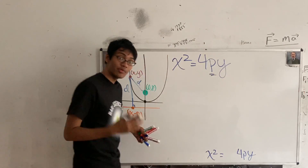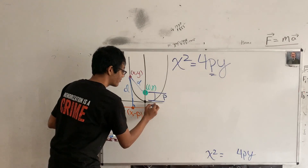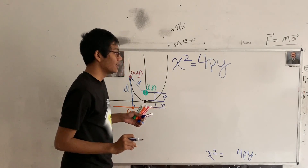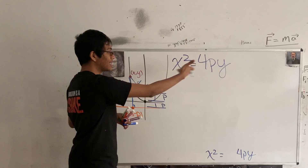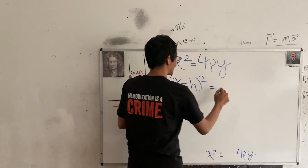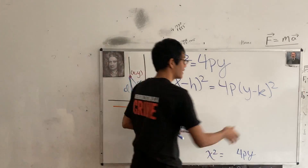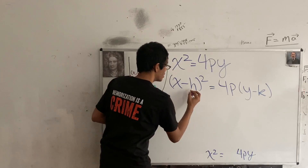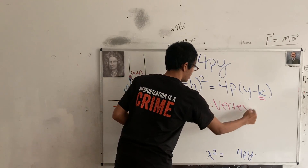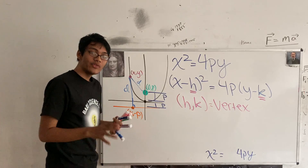The formula x squared equals 4py tells us a few things. First, p is the distance from the vertex of the parabola to the focus, and also the distance from the vertex to the directrix. It also hides the vertex location, which here is zero comma zero. If the vertex were moved to some other point h comma k, the equation becomes x minus h squared equals 4p times y minus k, where h and k are the coordinates of the vertex.